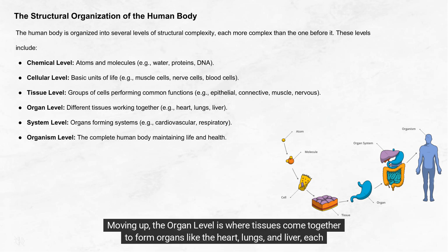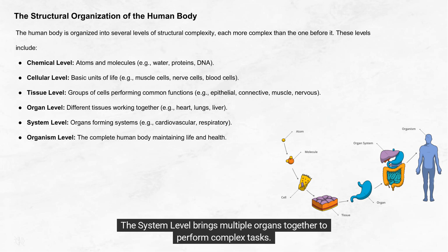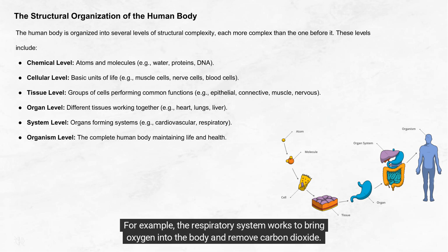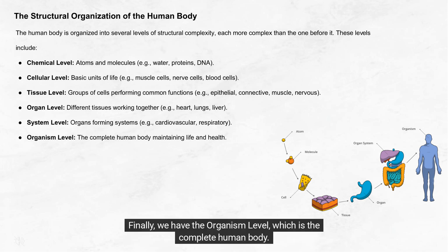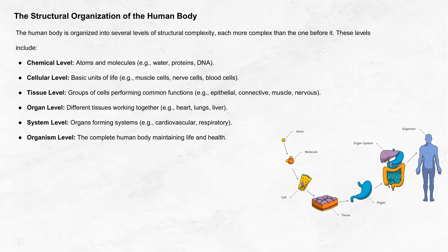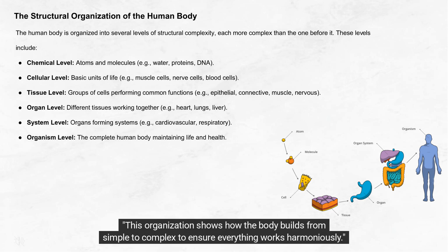Moving up, the organ level is where tissues come together to form organs like the heart, lungs, and liver, each with a specific job to keep the body functioning. The system level brings multiple organs together to perform complex tasks. For example, the respiratory system works to bring oxygen into the body and remove carbon dioxide. Finally, we have the organism level, which is the complete human body. All systems work together here to maintain life and health. This organisation shows how the body builds from simple to complex to ensure everything works harmoniously.